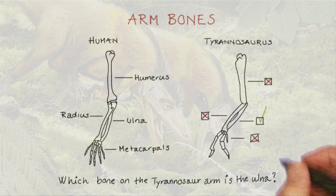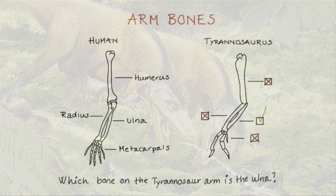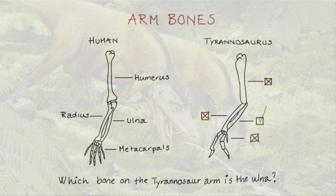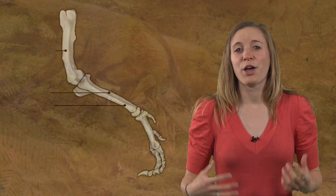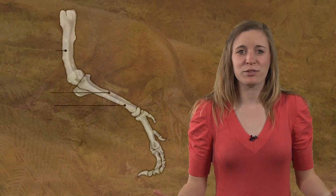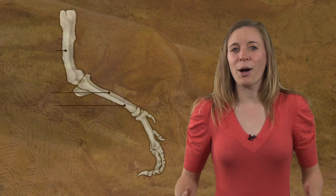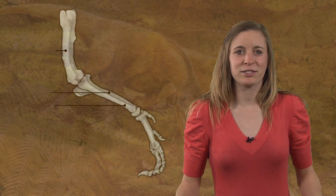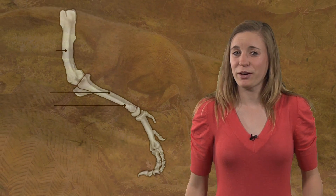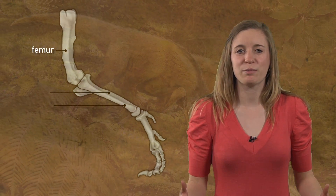Good work. The same arm bones are present in both humans and Tyrannosaurus. We humans have the same bones in our legs as well. The upper leg bone of Tyrannosaurus rex, which is the same one in my leg, is called a femur.